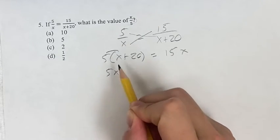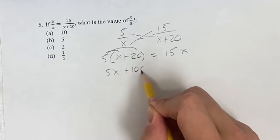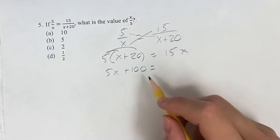Distributing the 5, we get 5x plus 5 times 20 is plus 100, which is equal to 15x.